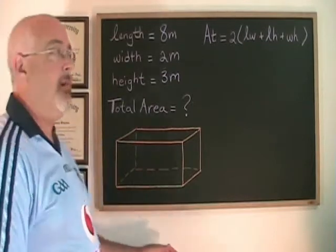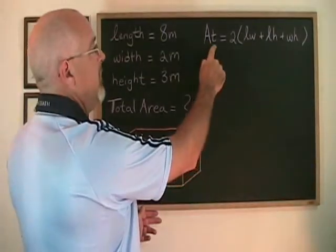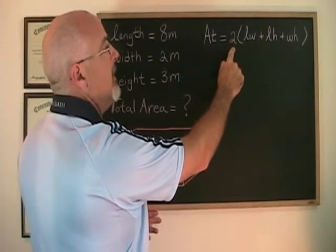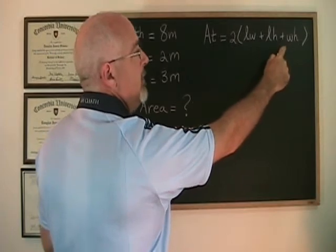The formula for total area of a rectangular prism can be expressed in this way. Area total is equal to 2 times the total of length times width plus length times height plus width times height.